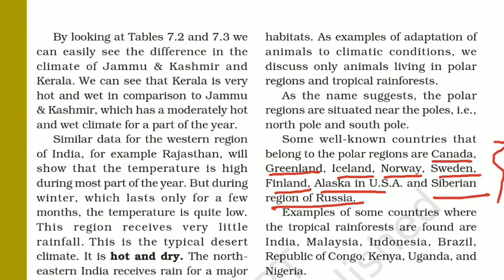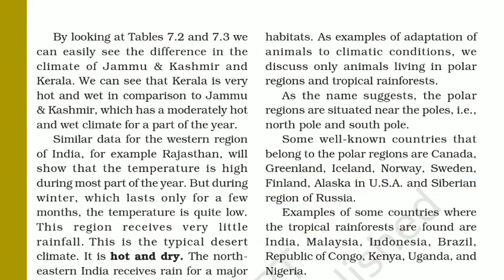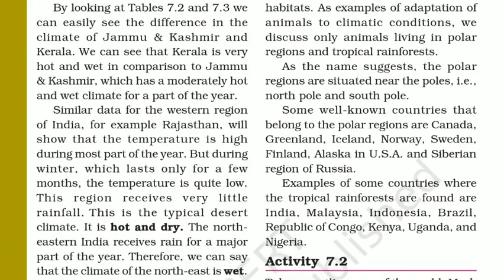On the other hand, the countries which fall under the tropical regions include India — our India comes under the tropical rainforest region — such as Malaysia, Indonesia, Brazil, Republic of Congo, Kenya, Uganda, and Nigeria. So these are some of the countries which fall under the tropical regions.